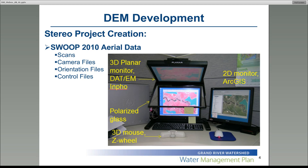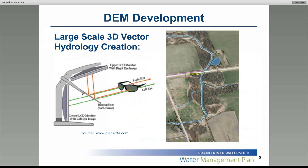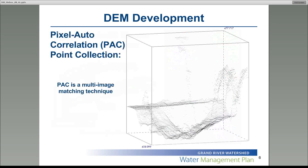This image on the screen is one of our 3D setups at the GRCA. Once the stereo data is all ready and working, the first piece of data that needs to be captured is the large-scale 3D vector hydrology. This is captured using the overlapped images and polygons and points for attaching X, Y, and Z values to each vertex. The second piece of data is the pixel autocorrelation point collection, or PAC — a multi-image matching technique that results in approximately one point every 47 centimeters, equating to over 100 million points per 5 kilometer square study area.